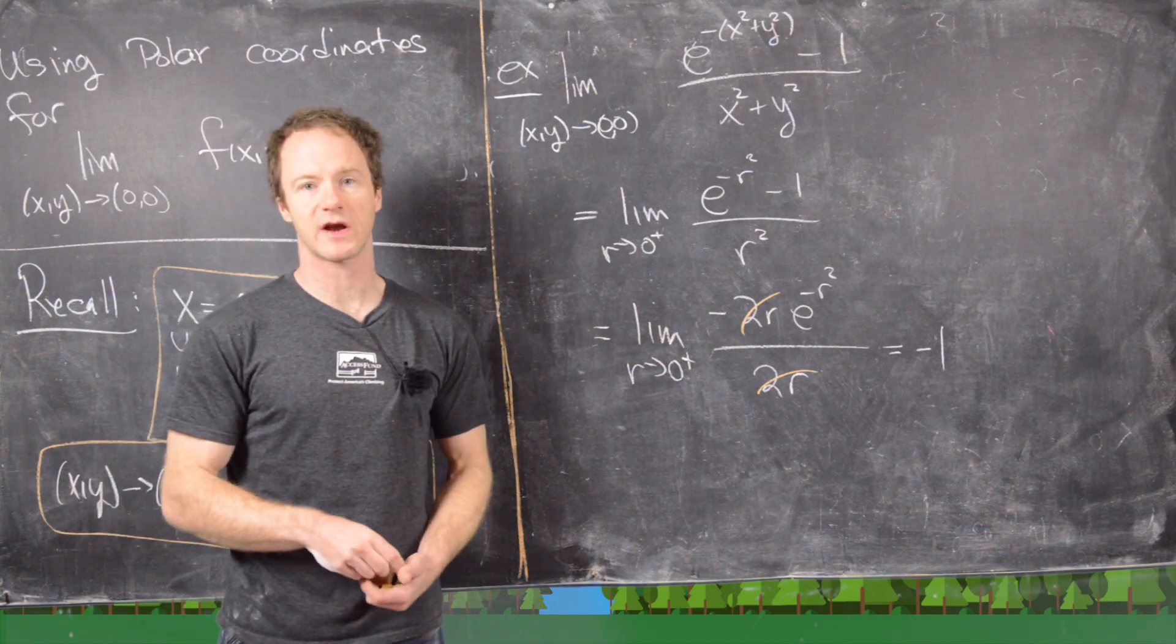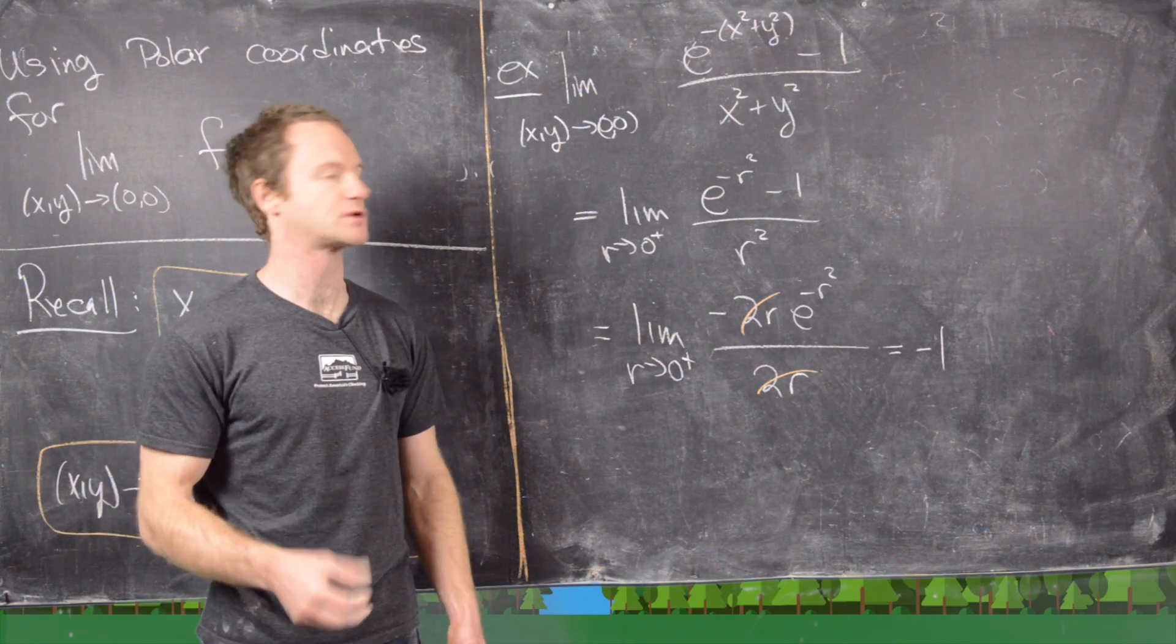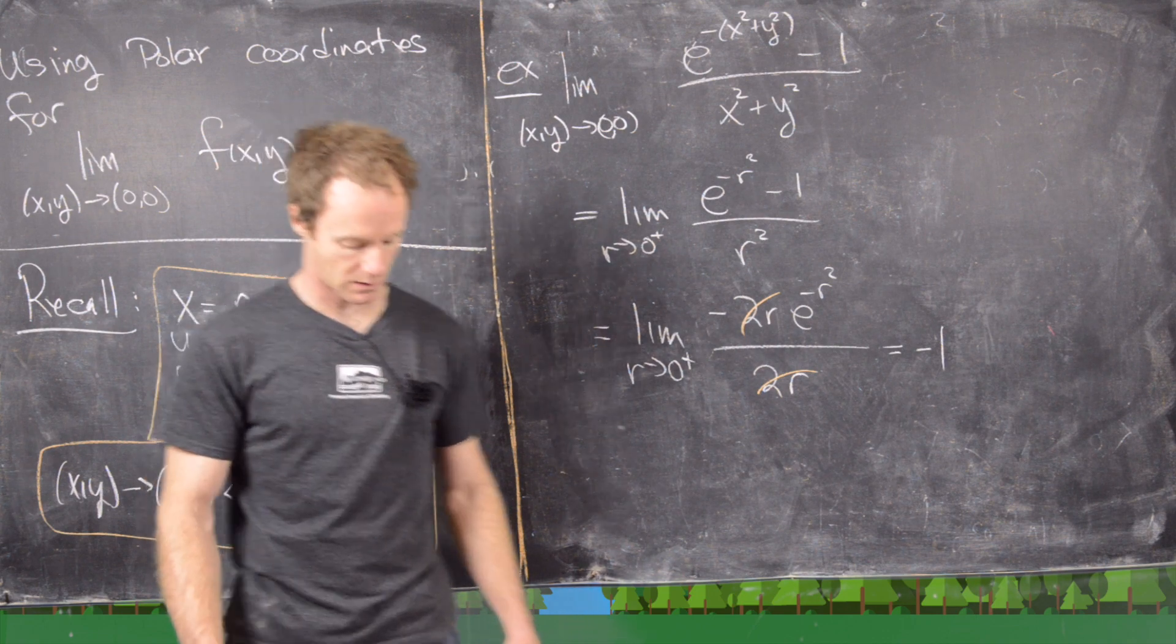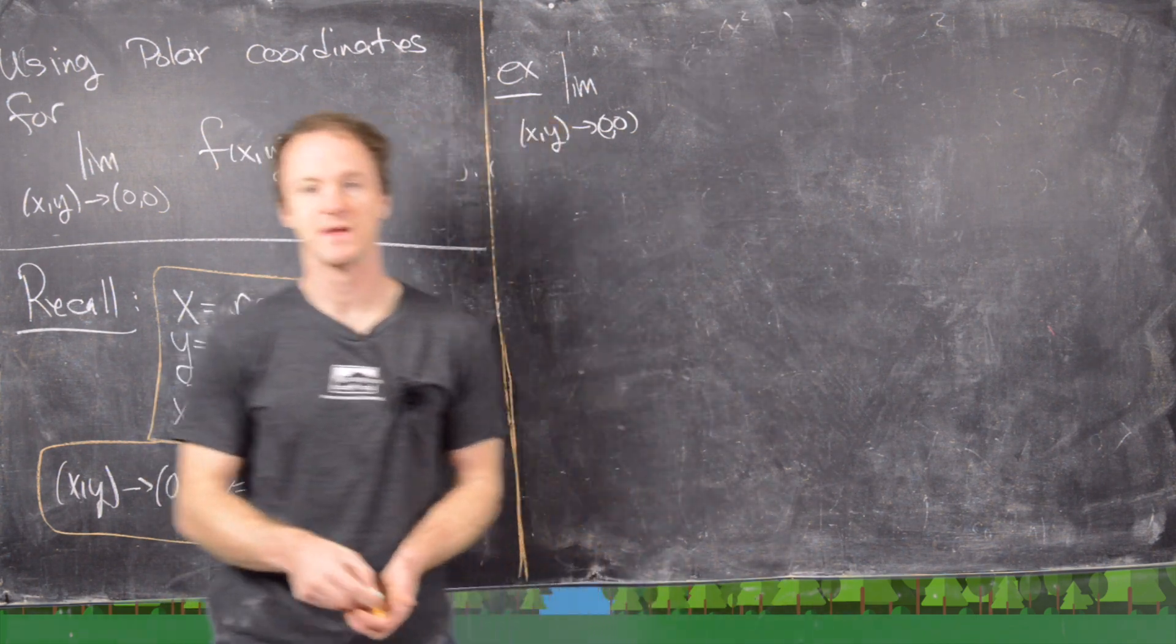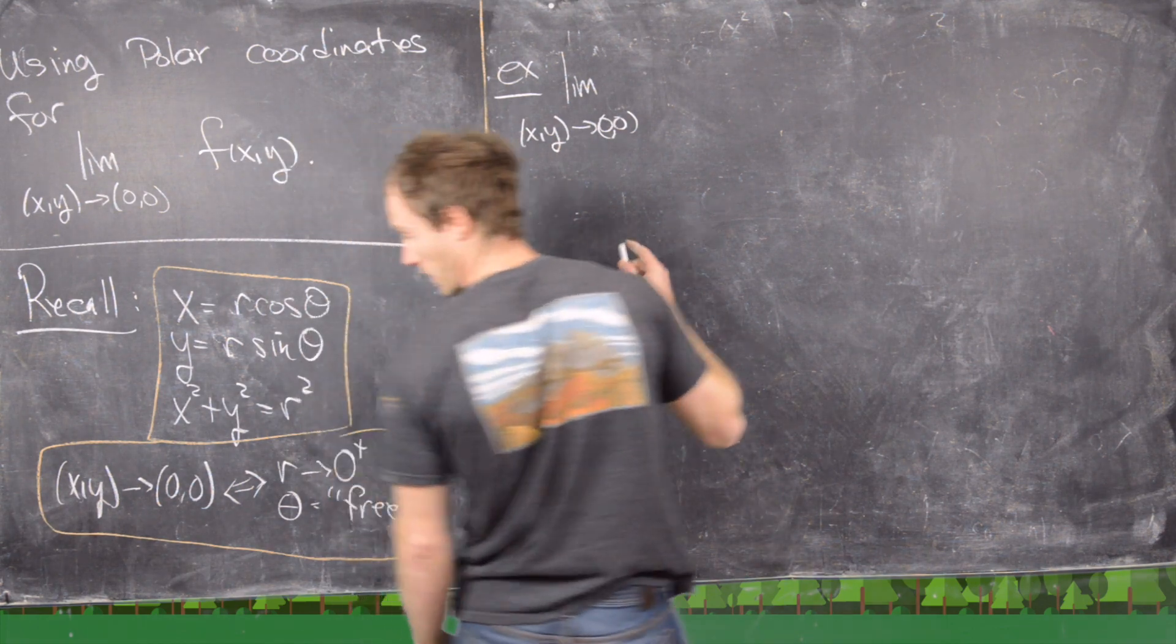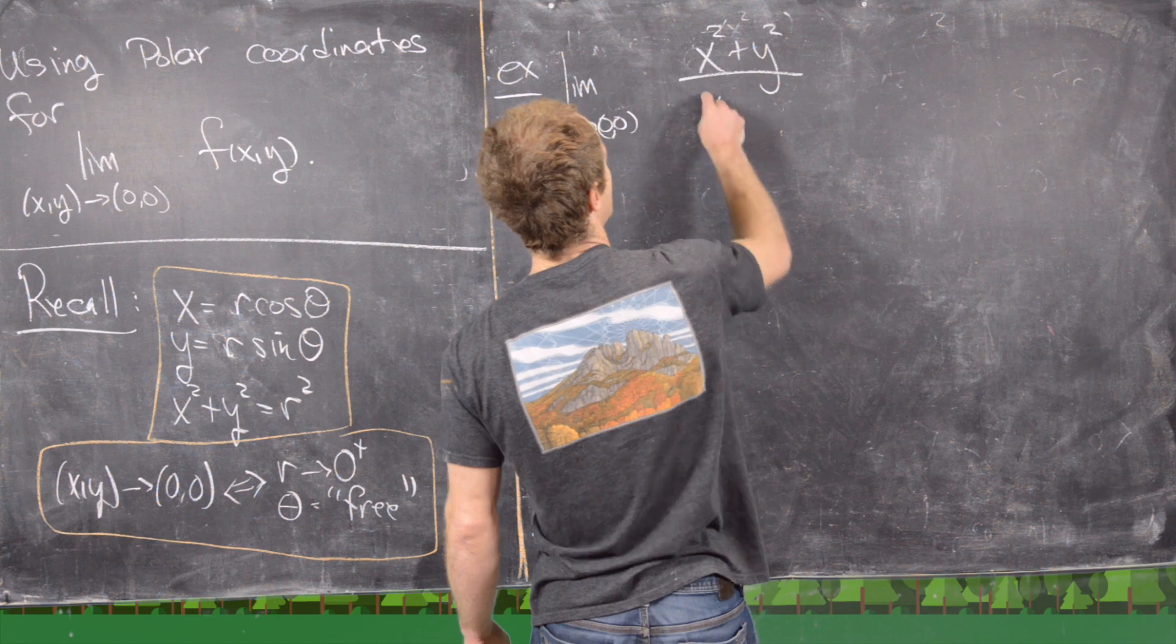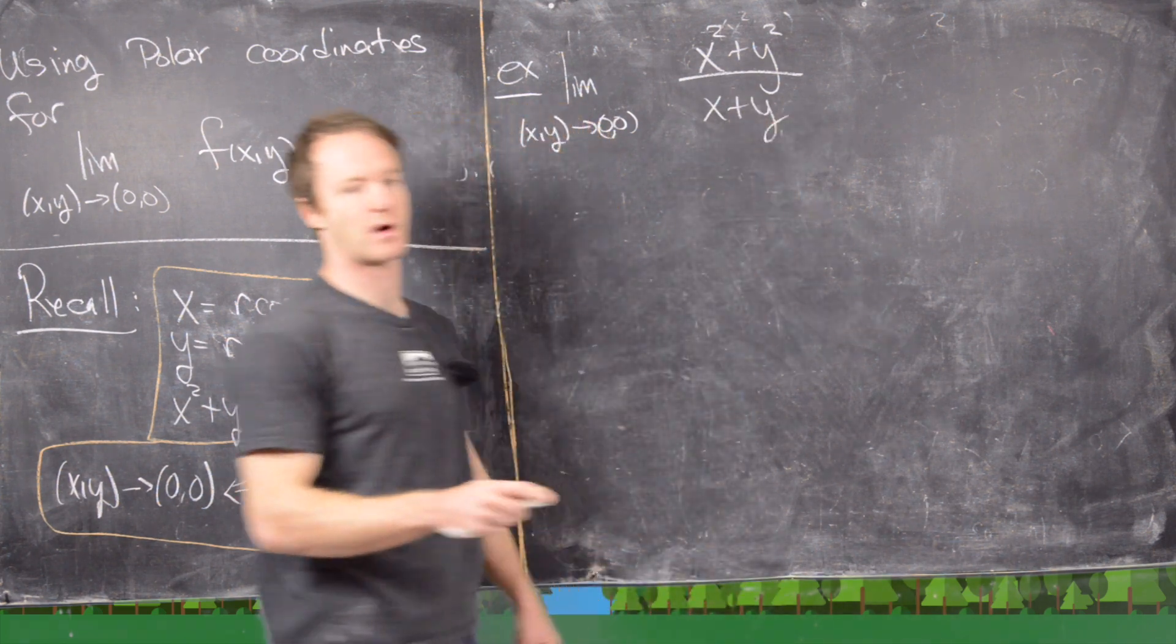So now I want to clean the board and show you a problem which almost works for this type of substitution but not quite. Another problem that we might want to look at is the limit as x, y goes to the origin of x squared plus y squared over x plus y.